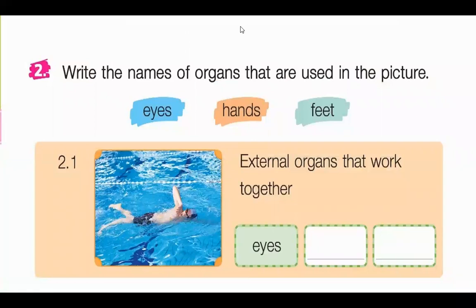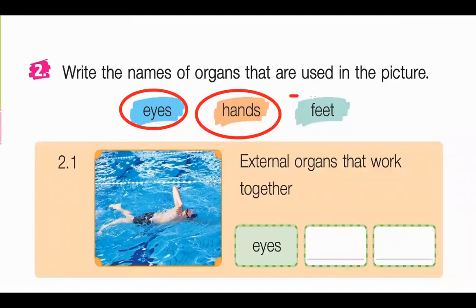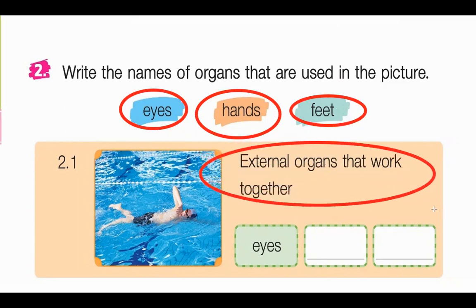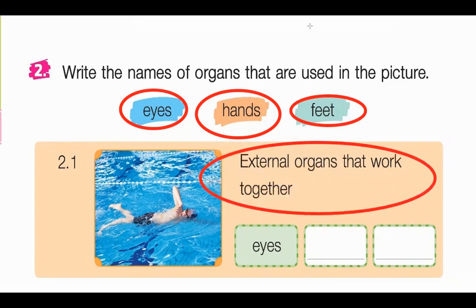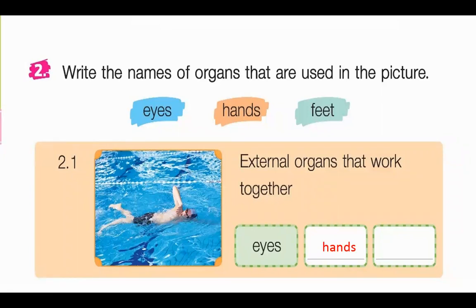Number two: write the names of the organs that are used in the picture. We have eyes, hands, and feet. Which external organs work together in this picture? Of course, we have the eyes, the hands, and the feet.